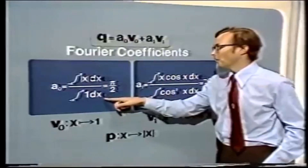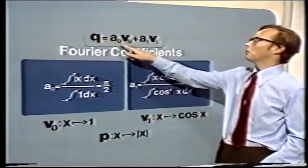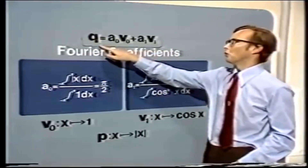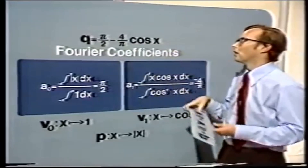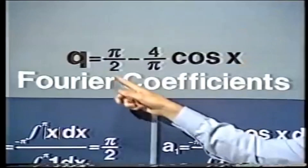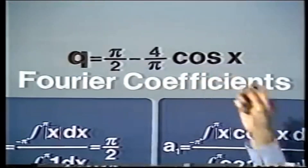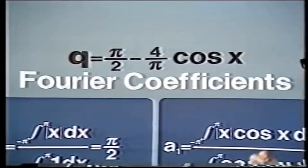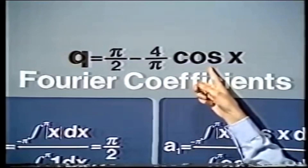So we now know A0, A1, V0 and V1, and we can put them all together to give us Q. This is what we get: Q is pi over 2 minus 4 over pi cos X. And that's the closest approximation we can get to the function mod X by taking a linear combination of 1 and cos X. Let's now see how good an approximation it really is.